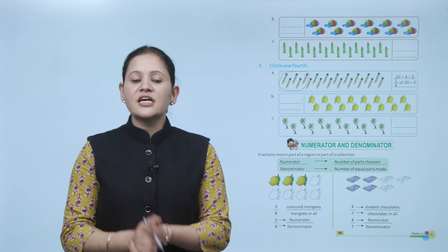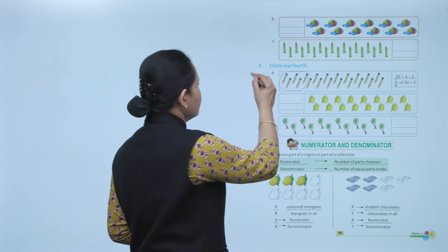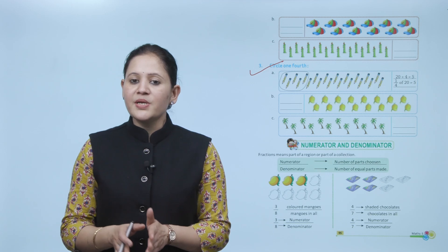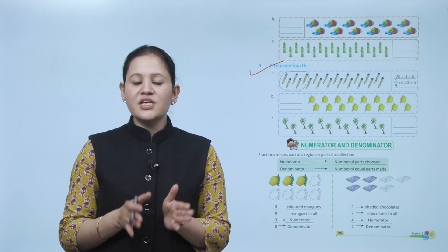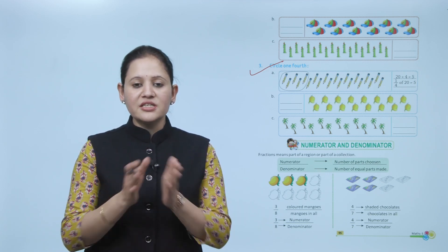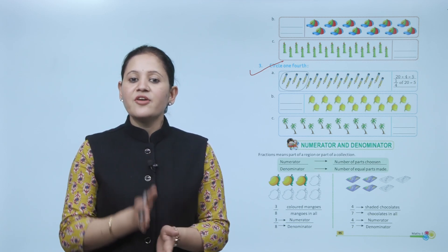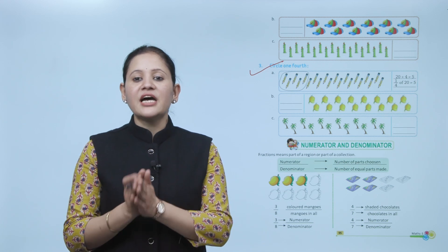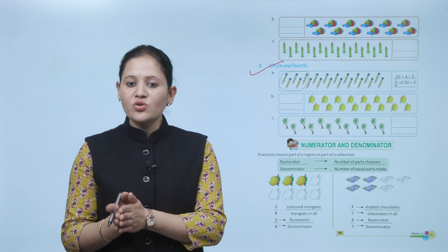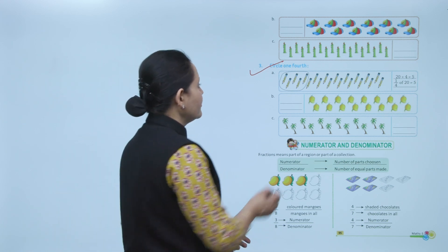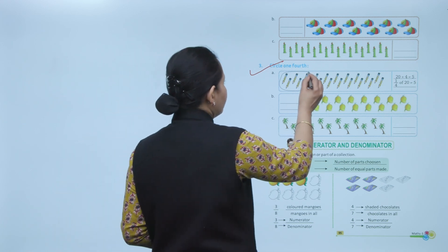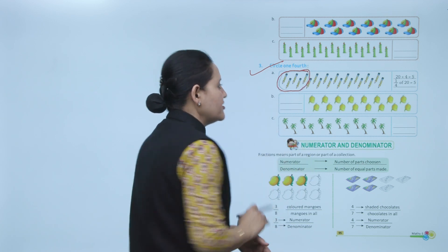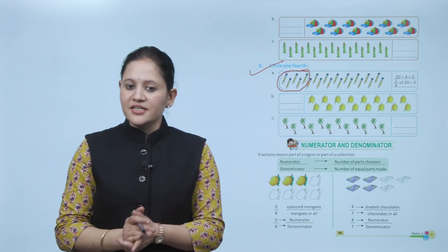Circle the fourth: total number of pencils is 20. We have to find one fourth, or quarter, which means we will divide by 4. 20 divided by 4 equals 5. So here, 5 pencils will represent 1 by 4 part of it.